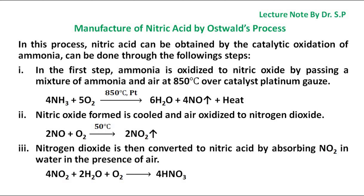Manufacture of Nitric Acid by Ostwald's Process. In this process, nitric acid can be obtained by the catalytic oxidation of ammonia, done through the following steps. In the first step, ammonia is oxidized to nitric oxide by passing a mixture of ammonia and air at 850 degrees Celsius over the catalyst platinum gauze.